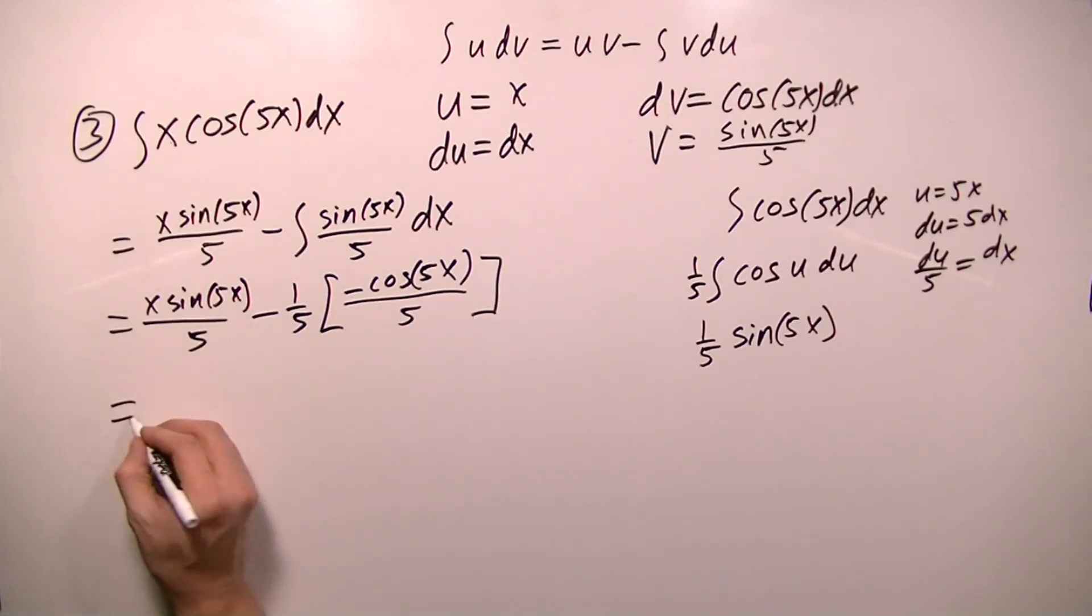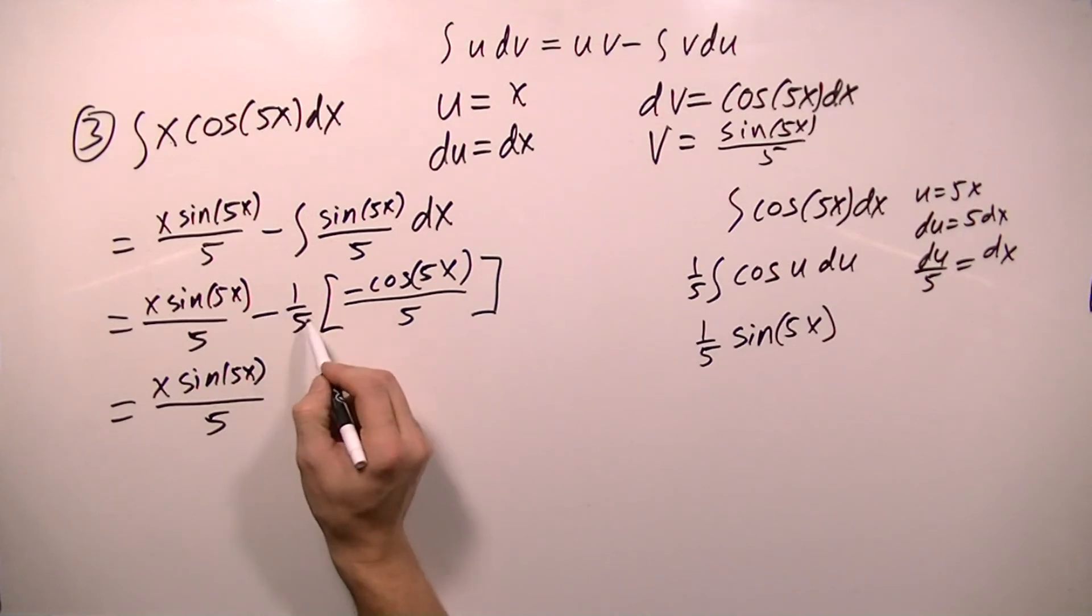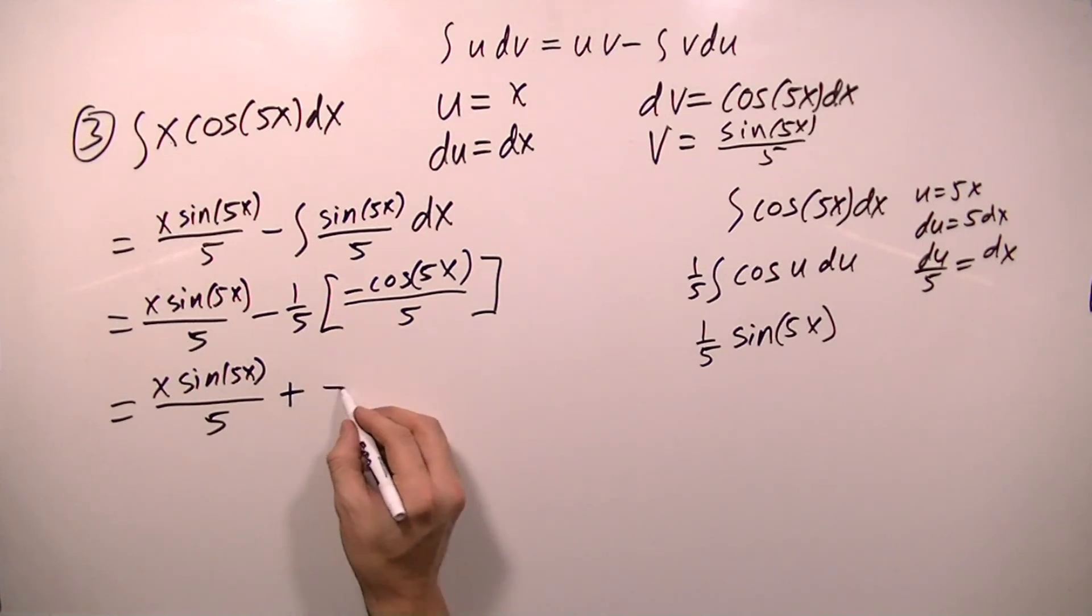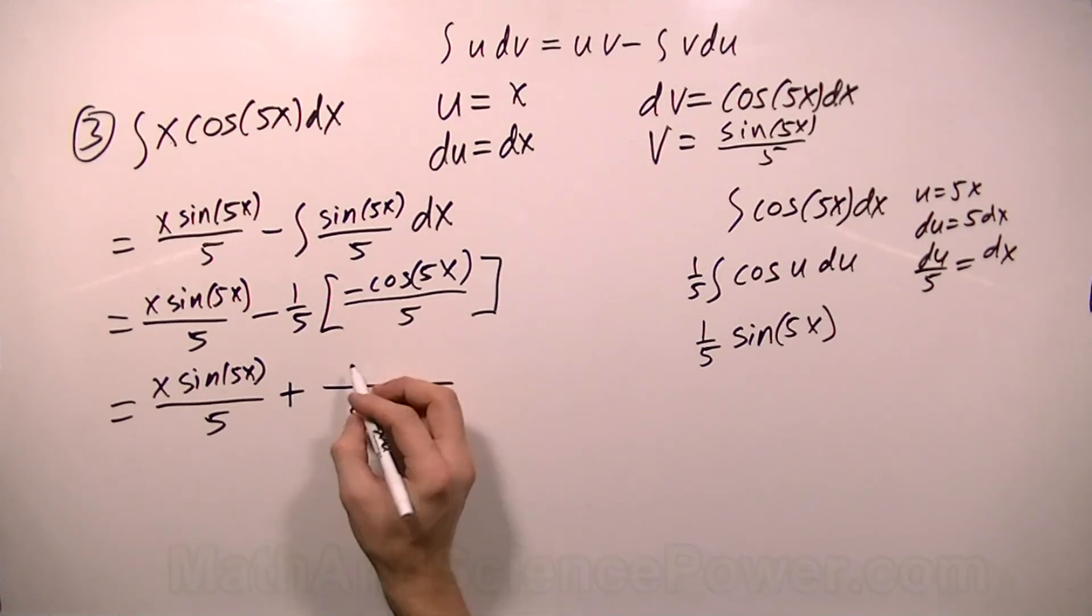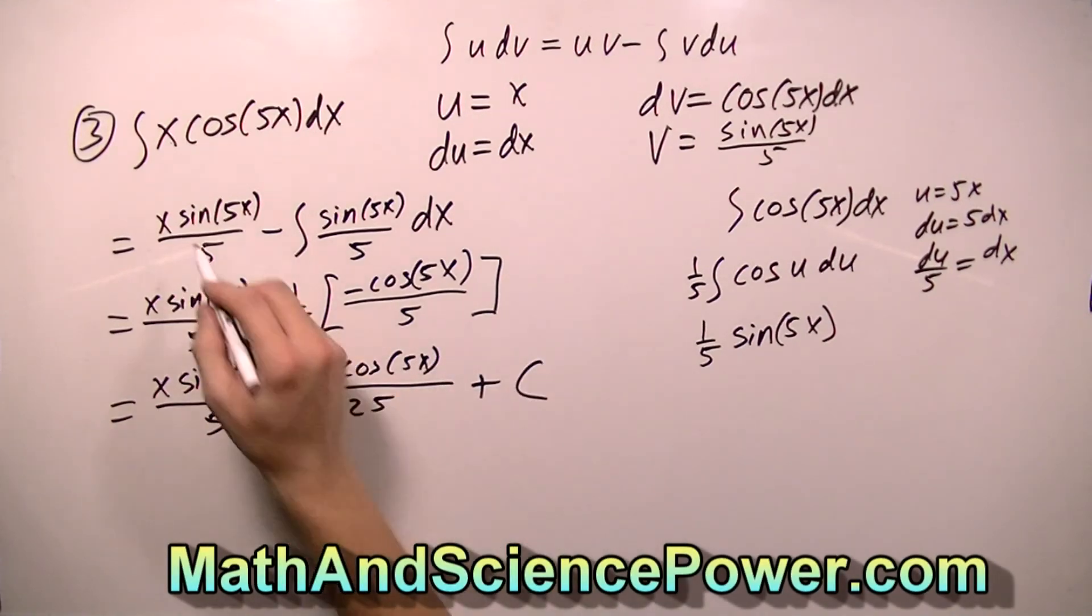And now I just need to simplify a little bit. I get x sine 5x over 5. And when I multiply this negative one fifth into this, this negative and this negative becomes positive. And 5 times 5 will be 25, and the top will just be cosine 5x. And I can't forget to add a C here because we are taking an indefinite integral.